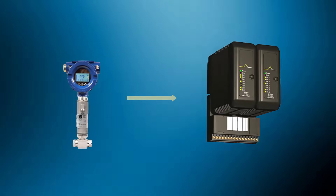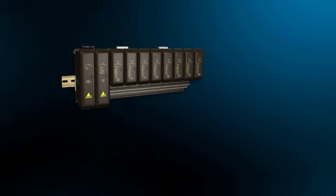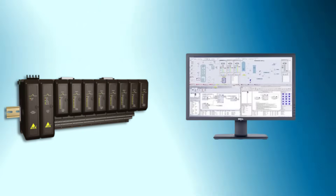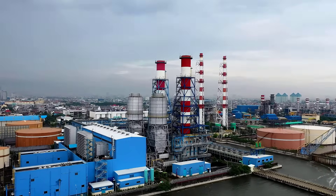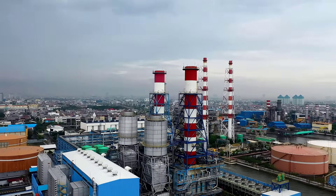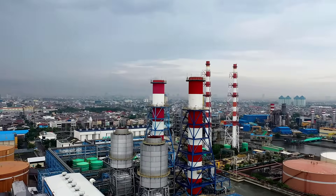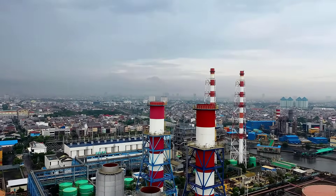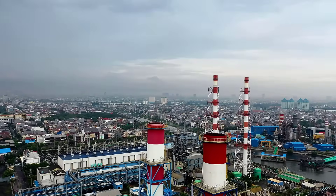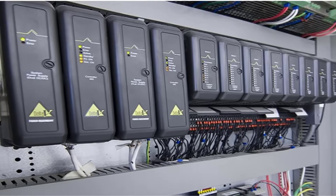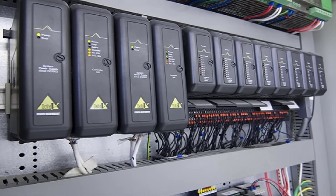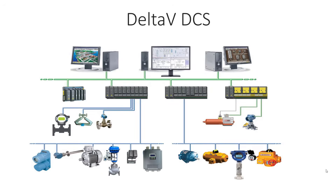The importance of a DCS system in a process industry cannot be denied. Delta V DCS systems are found in many oil and gas industries across the globe, which is why understanding Delta V DCS is very important if you want to get a job in that field. When you want to learn Delta V DCS, the first step is to understand the Delta V DCS architecture, which I will explain in this video.